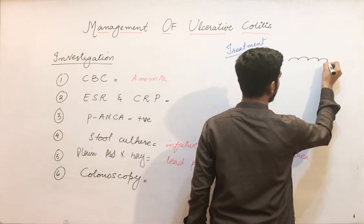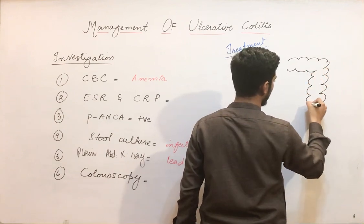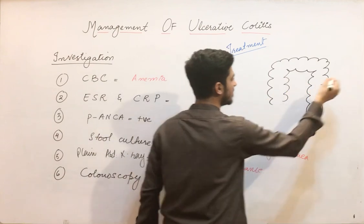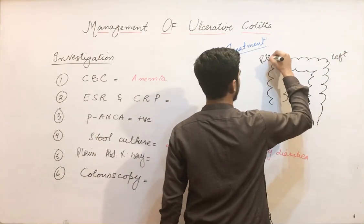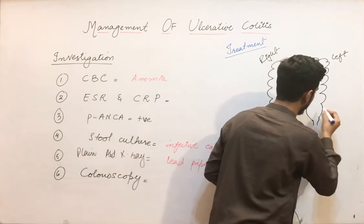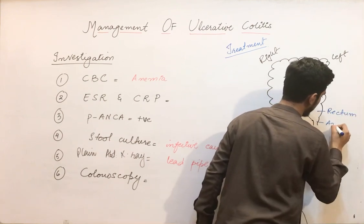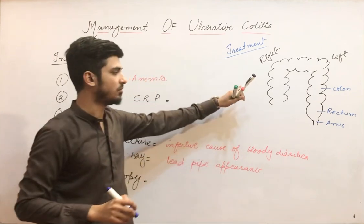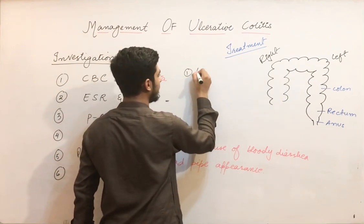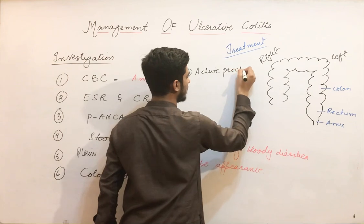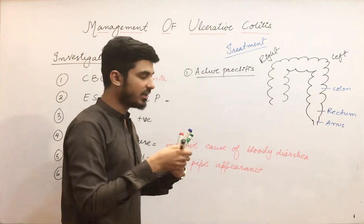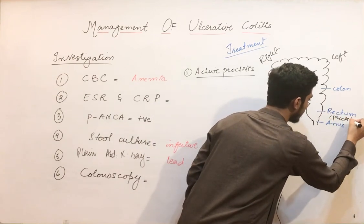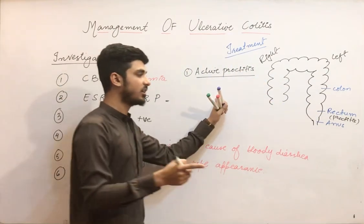Let me explain using a diagram of the colon. This is the colon, this is the rectum, here is the anus, and this is the colon extending — left side, transverse colon, and right side. First, we have active proctitis, which means the ulcerative colitis has only involved the rectum.